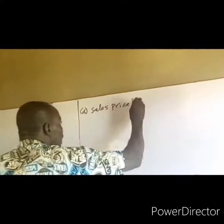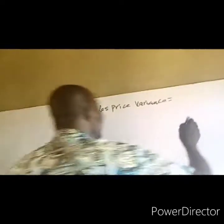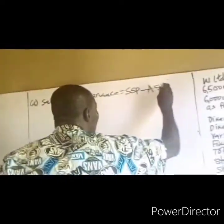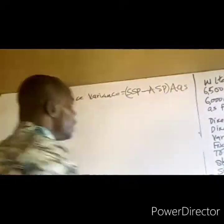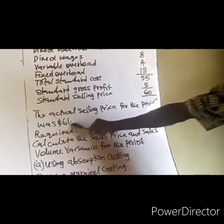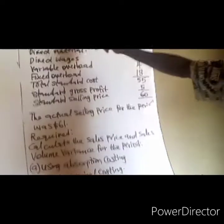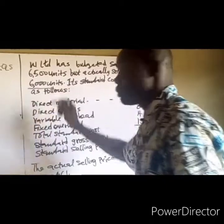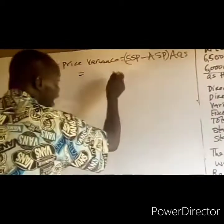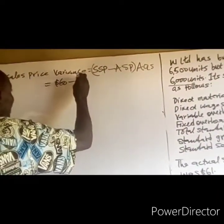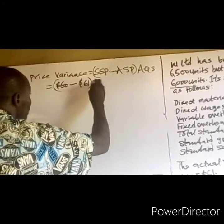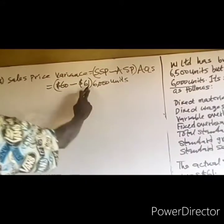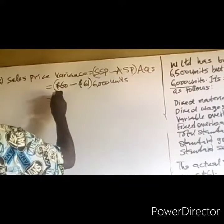Solution: we want to calculate the sales price variance. It is the difference between the standard selling price and the actual selling price, multiplied by the actual quantity sold. From the question, the standard selling price is $60, the actual selling price is $61, and the actual quantity sold is 6,000 units. Substituting into the formula: (60 − 61) × 6,000. The difference is $1, so $1 × 6,000 = $6,000.